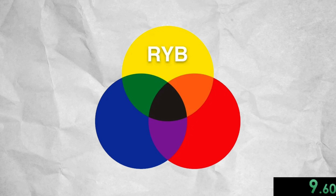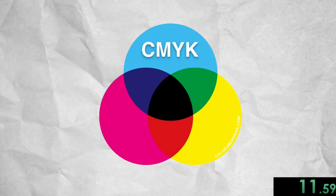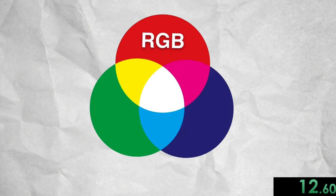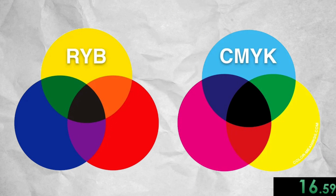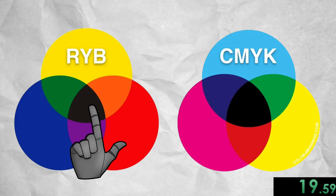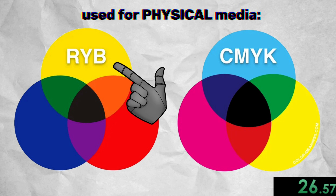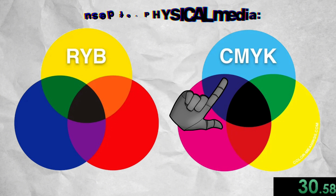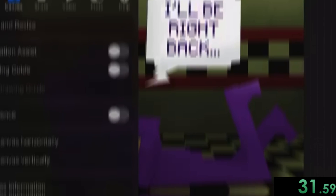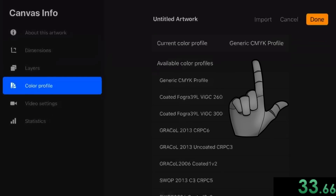In CMYK, it's cyan, yellow, and magenta. In RGB, it's red, green, and blue. RYB and CMYK are subtractive, meaning that mixing their colors together creates black or something very close to it. Black is sometimes referred to as key or K, since B is taken by blue. These mixing systems are used for physical media. RYB served as the foundation for color theory as a whole and is used for art education and paint mixing. CMYK is for color printing — if you plan to print out your art, make sure the color profile is set to CMYK.